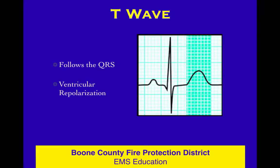The wave after the QRS can be positive or negative — it's shown positive here — and it's called the T wave. That is when the ventricles are resetting: they're repolarizing, getting ready to contract again, resetting electrically, relaxing mechanically, and filling up.